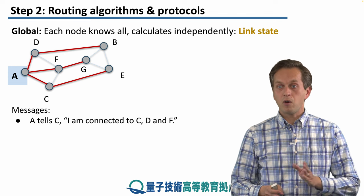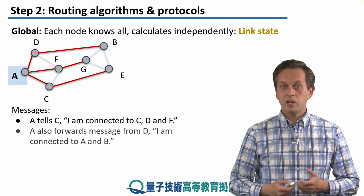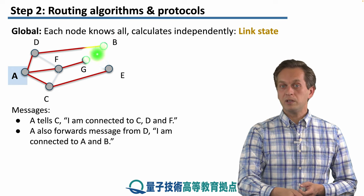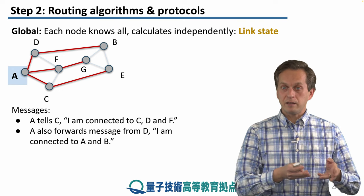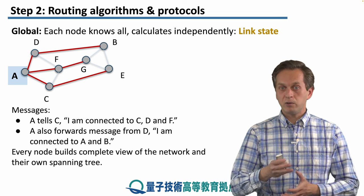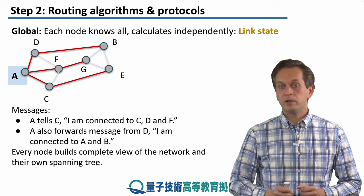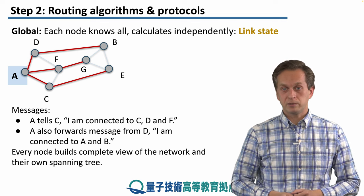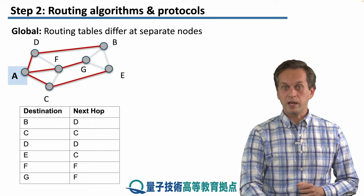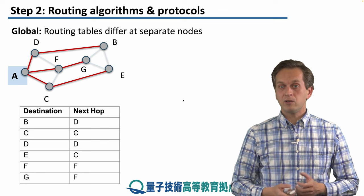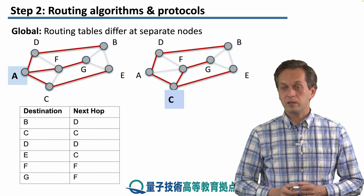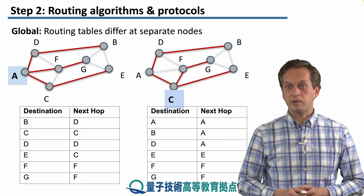Node A also receives similar messages from D — D tells A it is connected to B and A. A takes this message from D and forwards it to C. By sharing all information about who is connected to whom, the entire network topology becomes known to all nodes. This is the spanning tree for node A, but it doesn't mean all nodes have the same spanning tree and routing table — for example, C might have a different spanning tree and routing table.